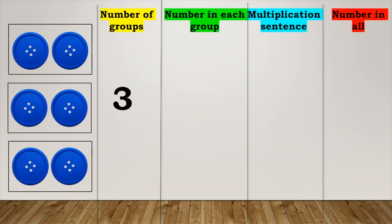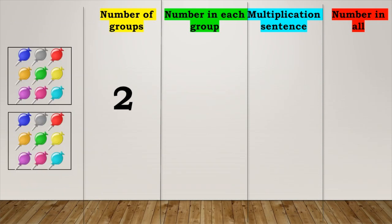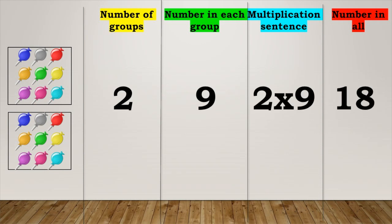X is the symbol of multiplication. Let us see how we build multiplication by looking at a few pictorial examples. Three groups of two buttons each — we write three twos are six. Two groups of nine toffees each — two nines are eighteen.